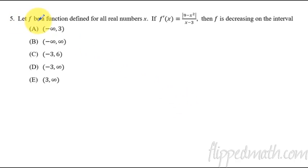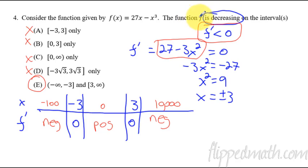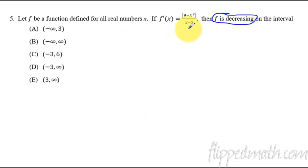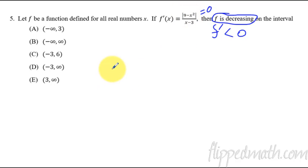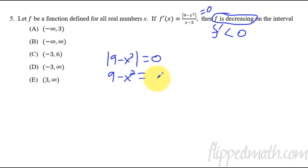Last one: we have a function on all real numbers, f prime equals this expression, and f is decreasing on what interval — same concept as before. It decreases when f prime is less than zero. The derivative equals zero only when the numerator equals zero: absolute value of 9 minus x squared equals zero, so 9 minus x squared equals zero, giving x squared equals 9 and x equals plus or minus 3 again.